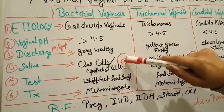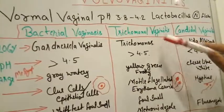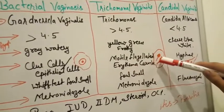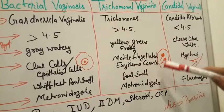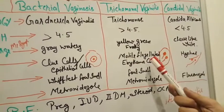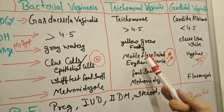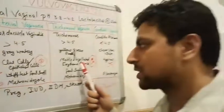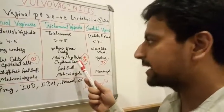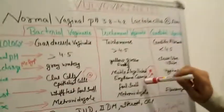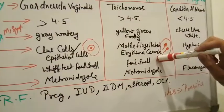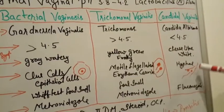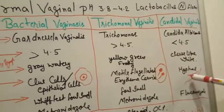In trichomonal vaginitis on microscopy we find a motile flagellate. We also see strawberry vagina and strawberry cervix in trichomonal vaginitis. In candidal vaginitis we see hyphae on microscopy.